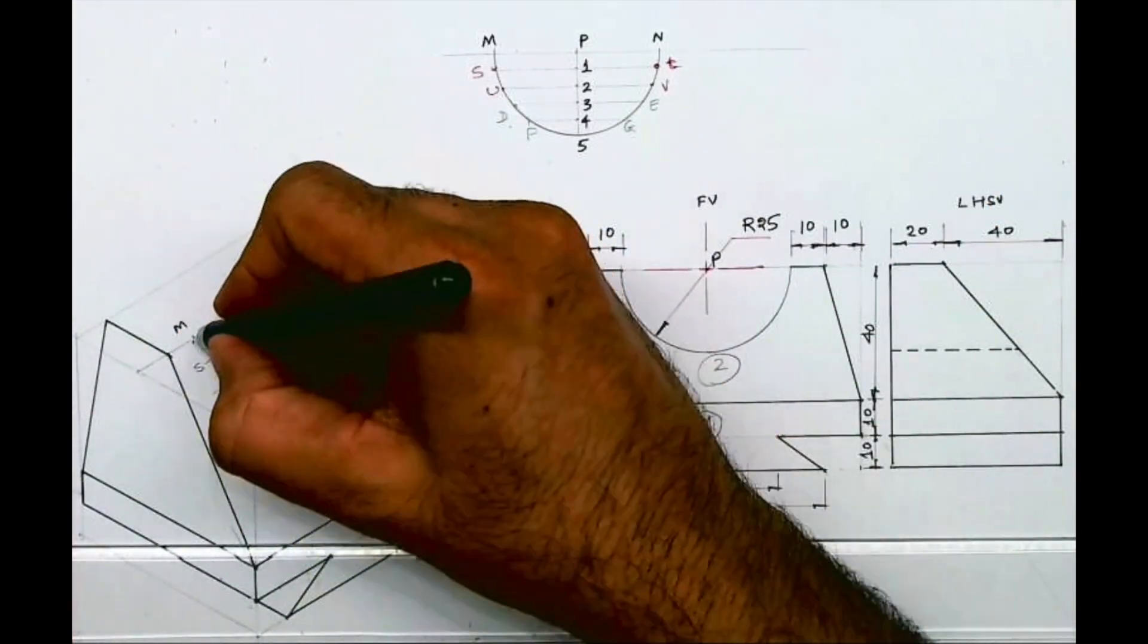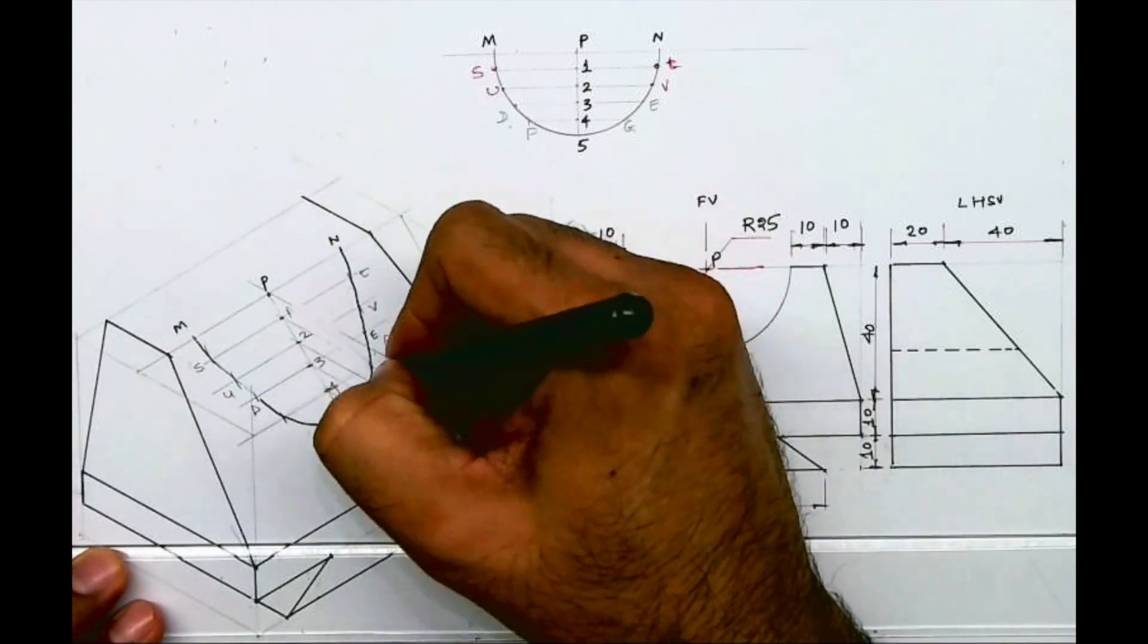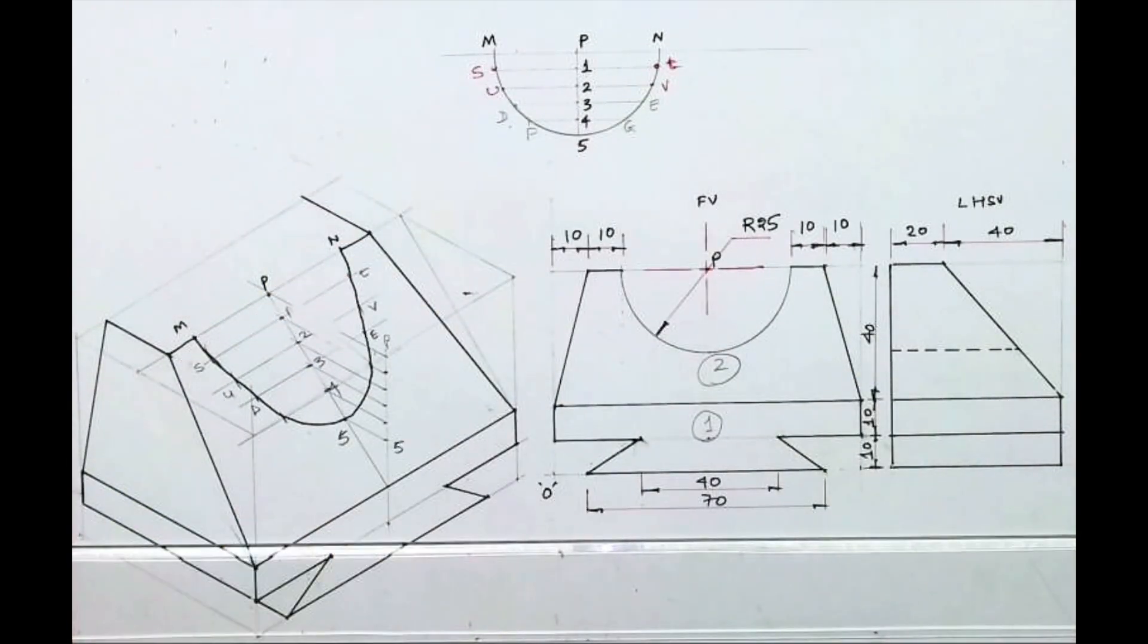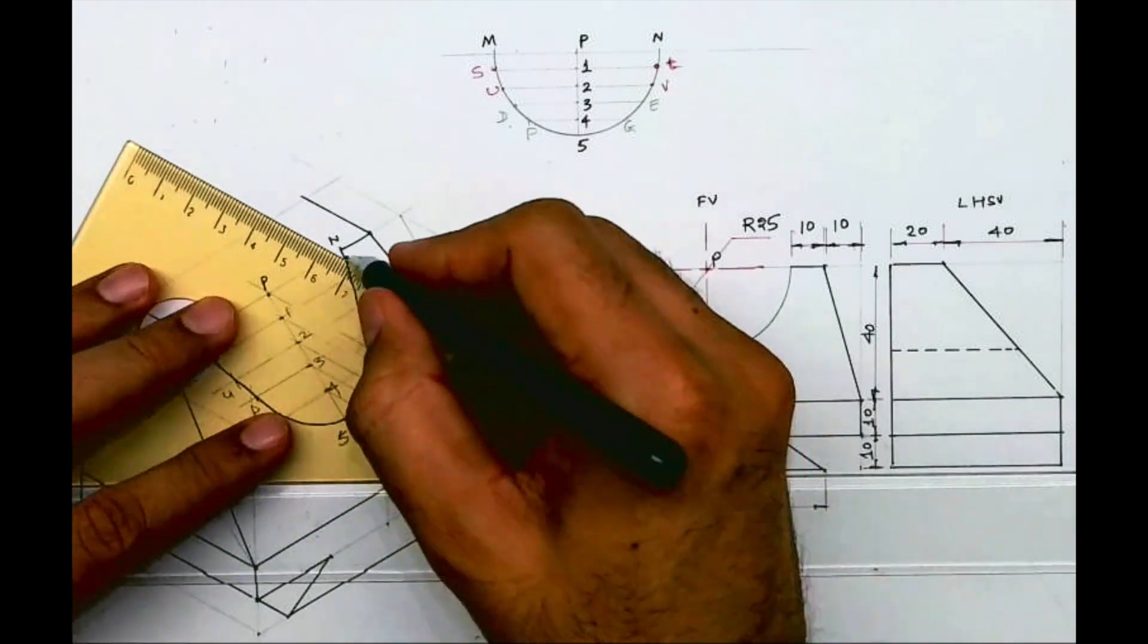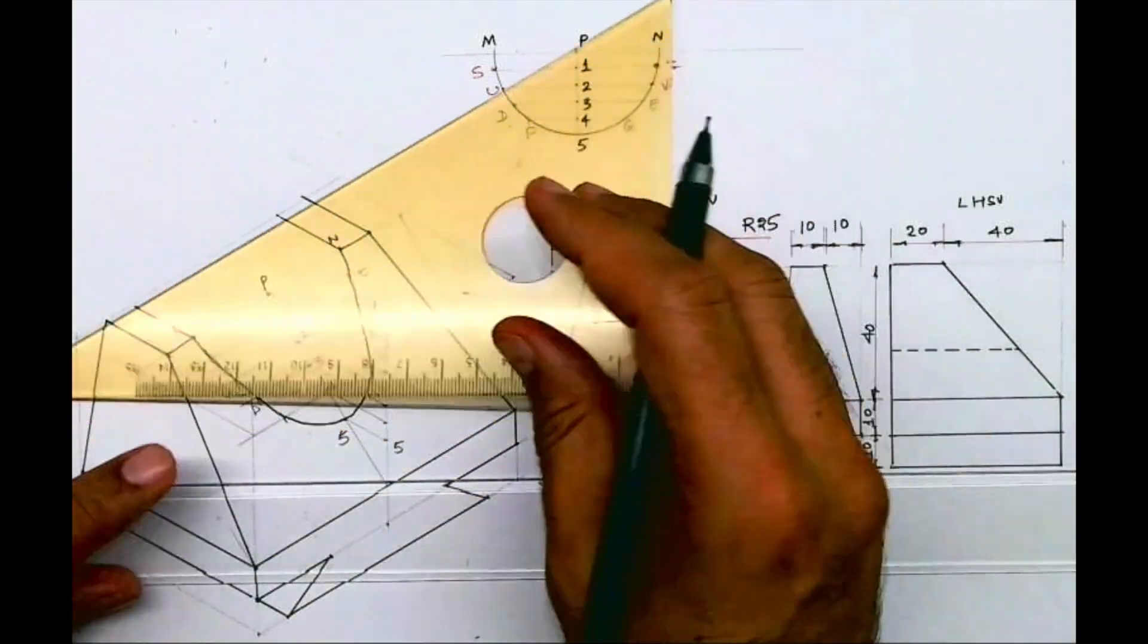Now you can join all these points with freehand. So we got the semicircular part. Now behind also there is a circle, but the behind circle we need to draw it by four-center method.